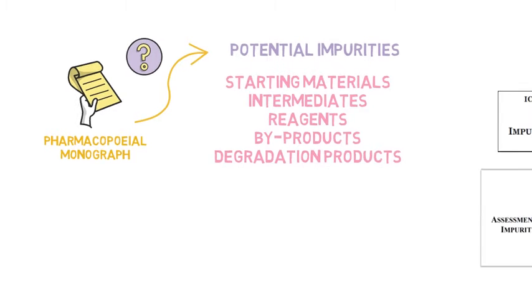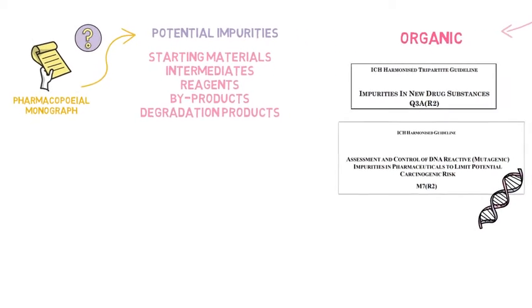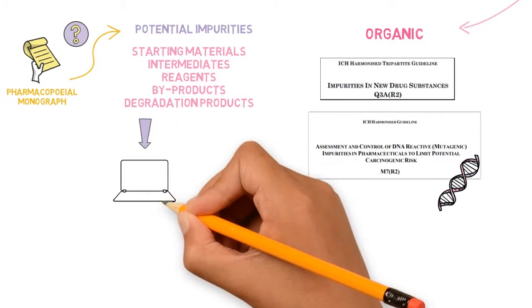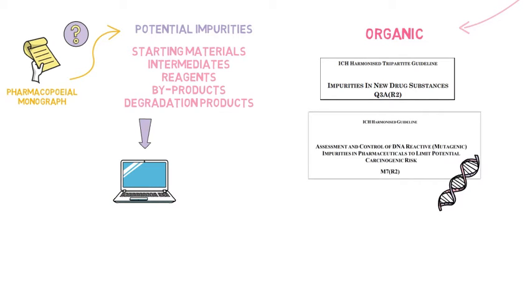And for each one of these impurities, a mutagenicity prediction must be presented within the DMF. Those which are potentially mutagenic,